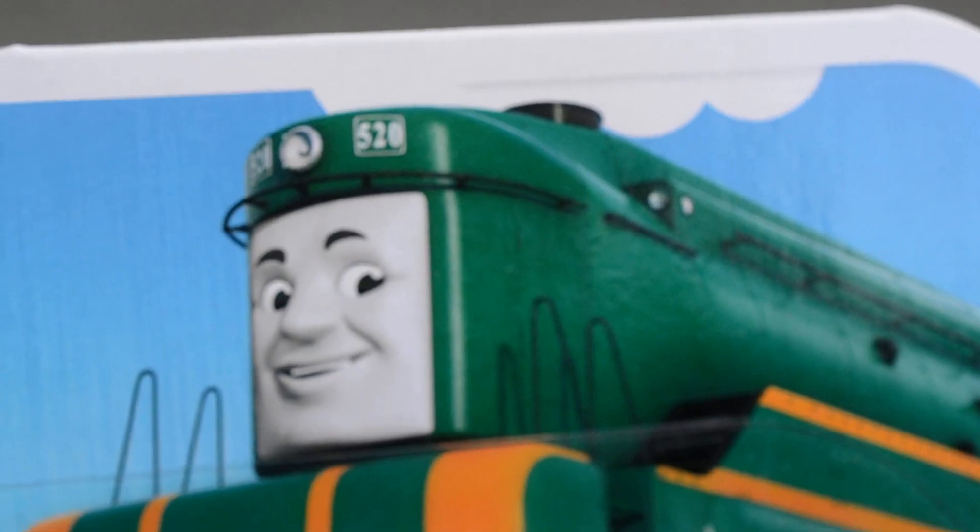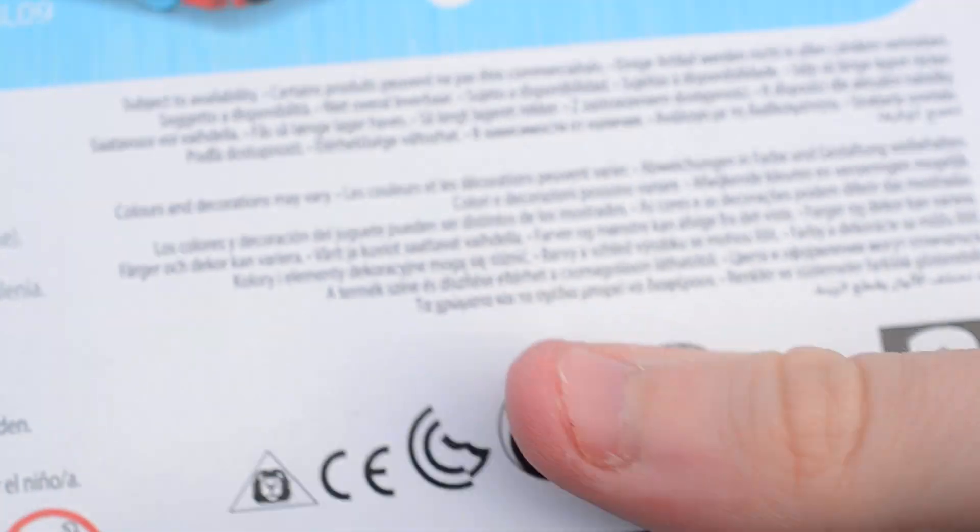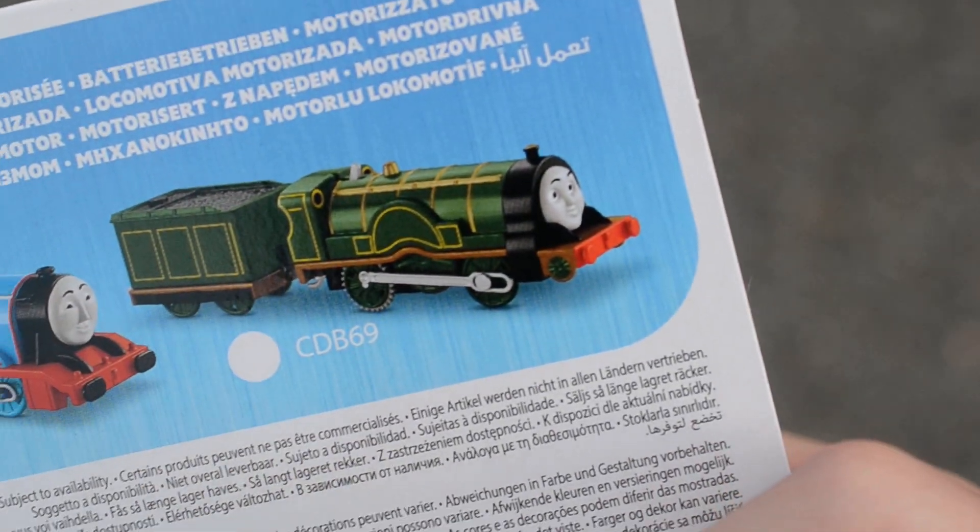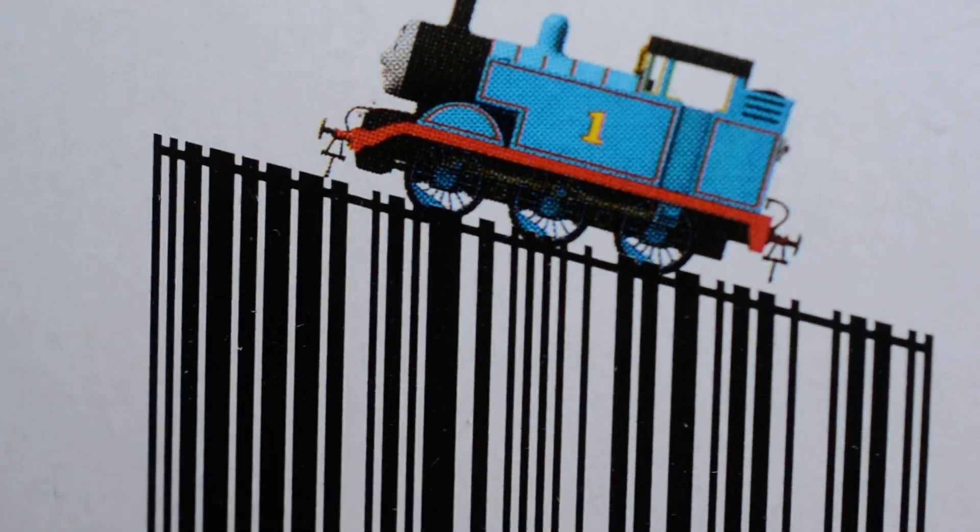Shane's promo picture up there. Here's the back of the box that shows James, Gordon and Emily. Do you prefer it being called Trackmaster or Motorized? Let me know what you think. There's Thomas going up this track thing where the barcode is.